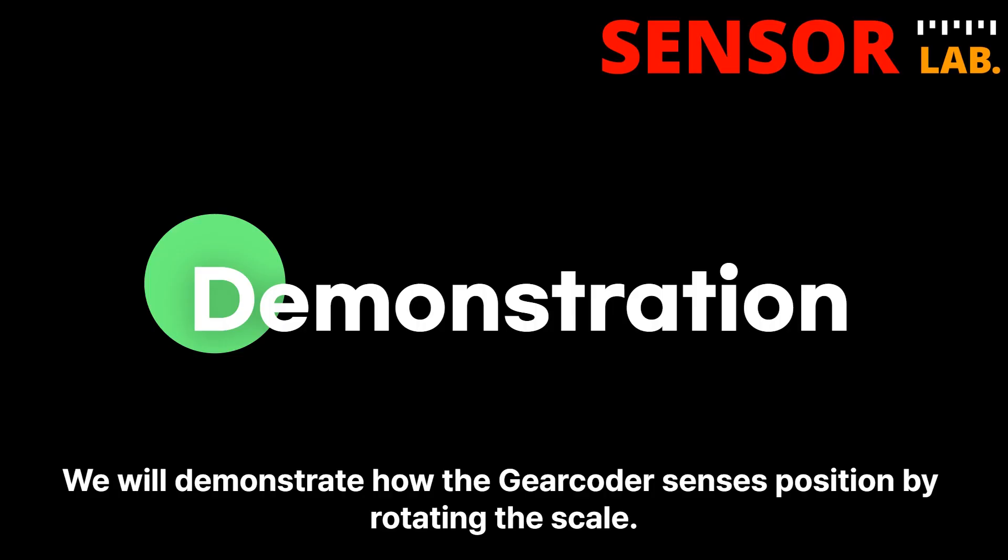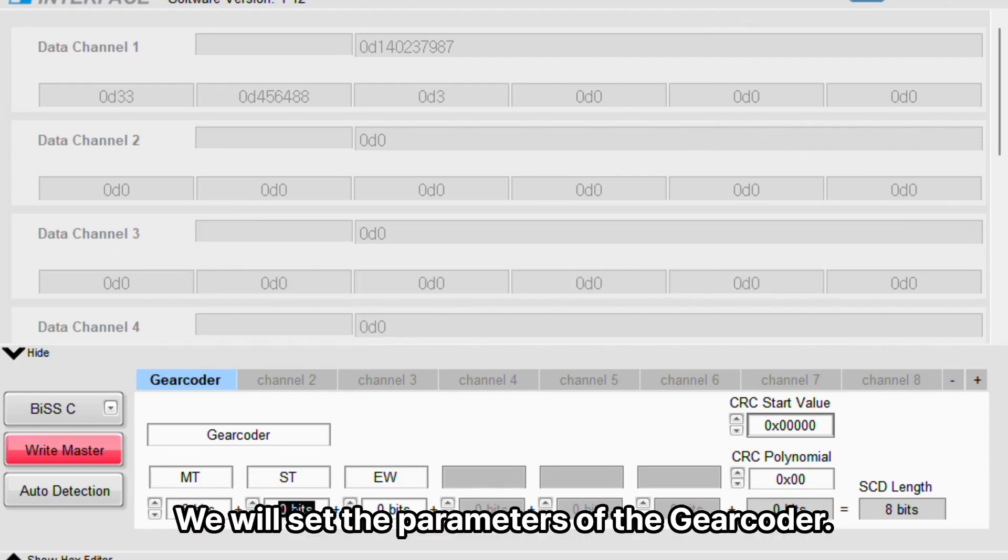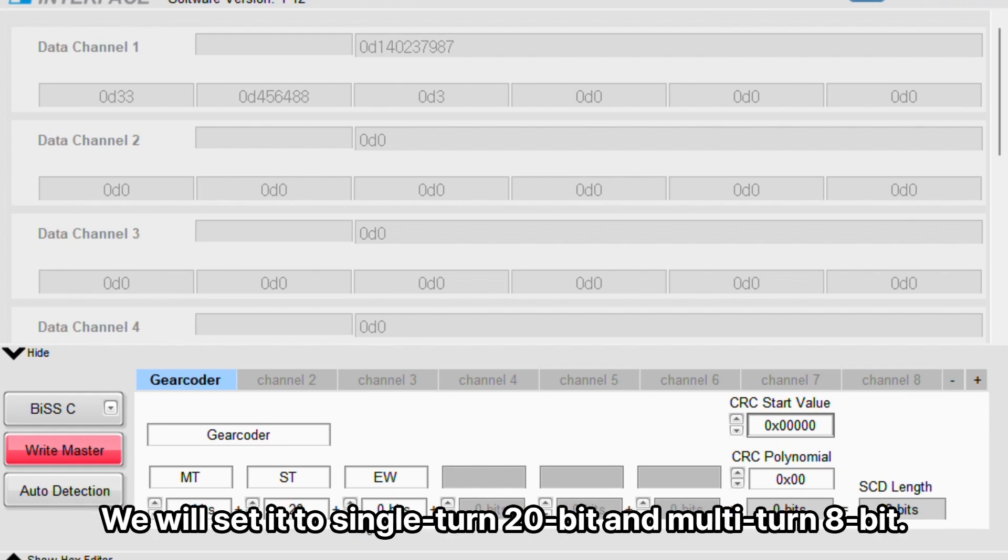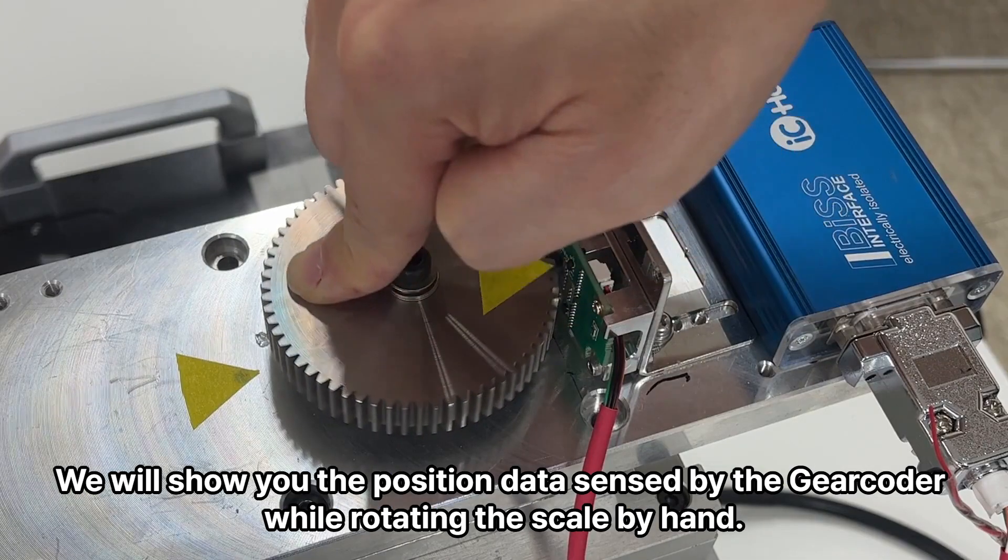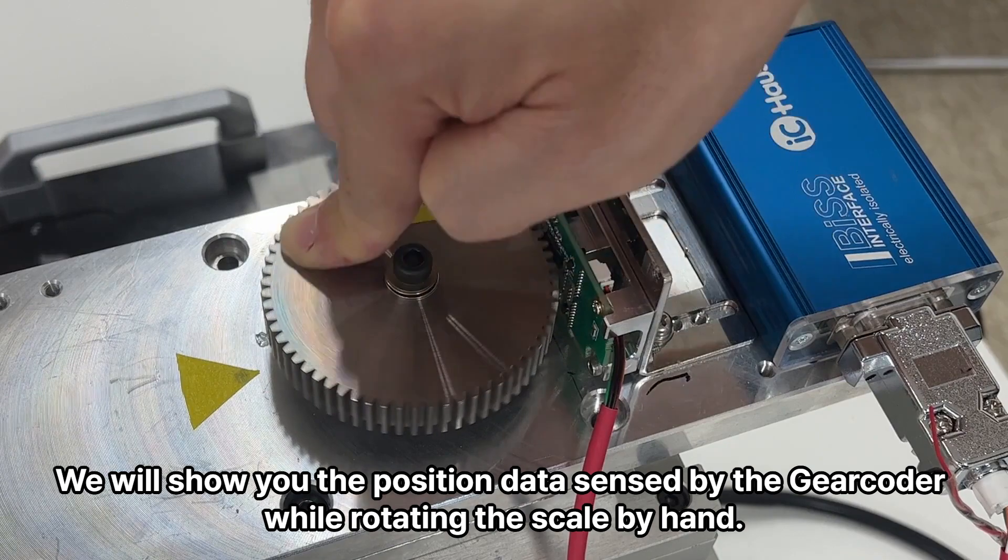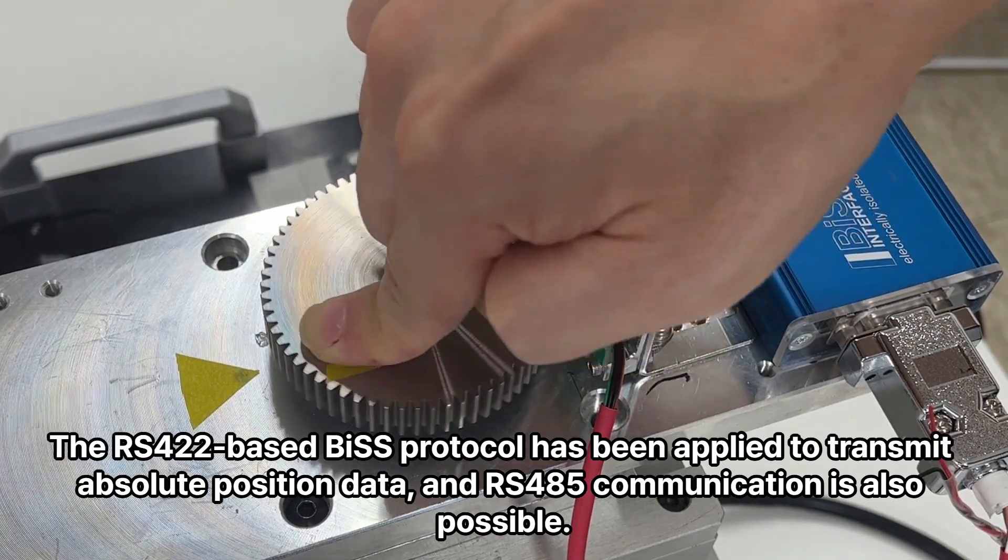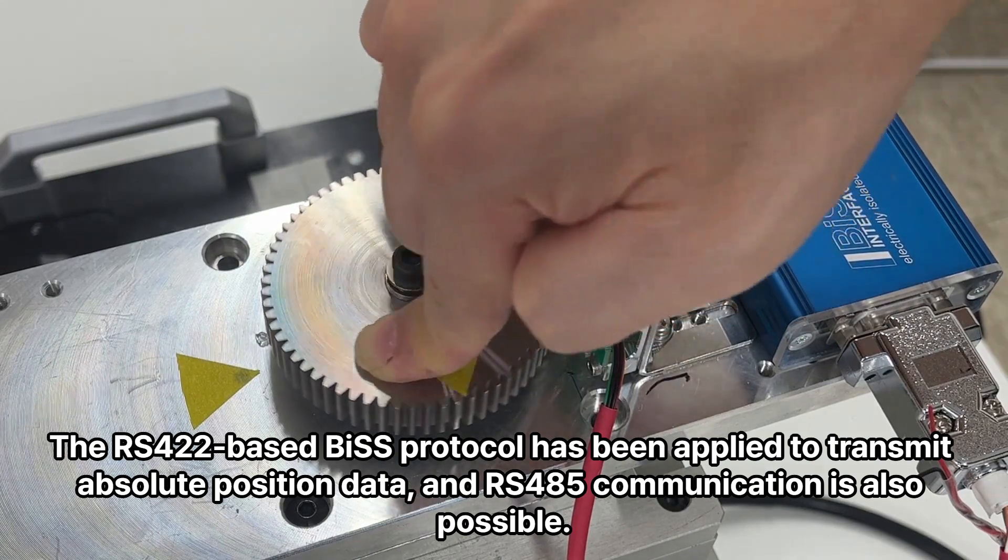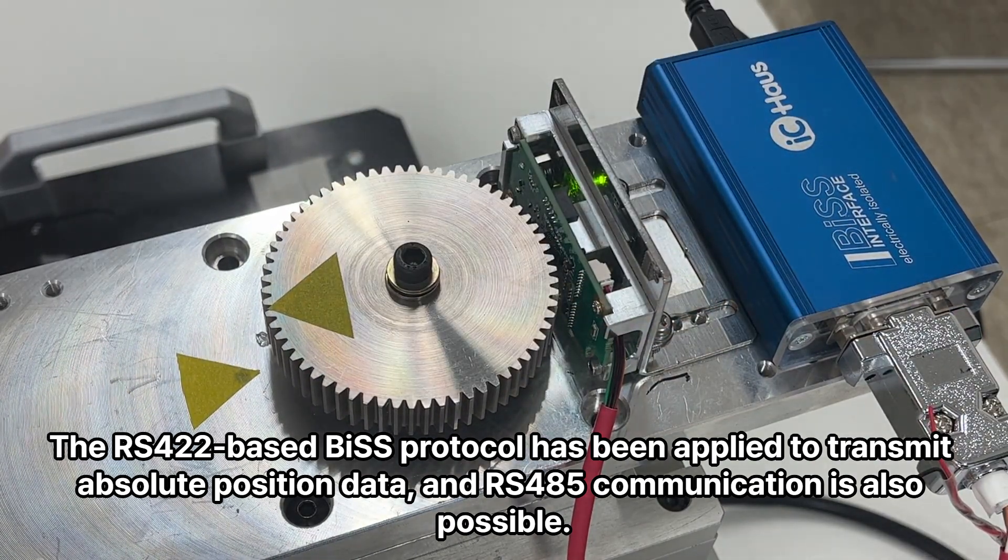We will demonstrate how the gearcoder senses position by rotating the scale. We will set the parameters of the gearcoder. We will set it to single turn 20-bit and multi-turn 8-bit. We will show you the position data sensed by the gearcoder while rotating the scale by hand. The RS422 based BiSS protocol has been applied to transmit absolute position data, and RS485 communication is also possible.